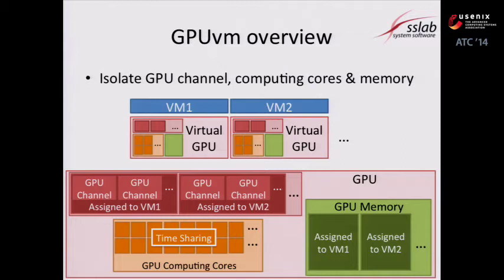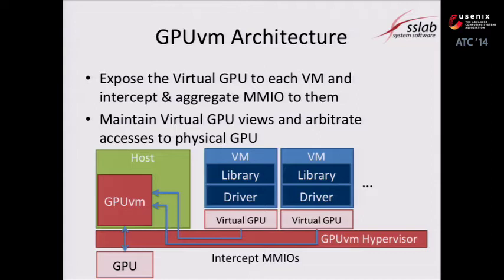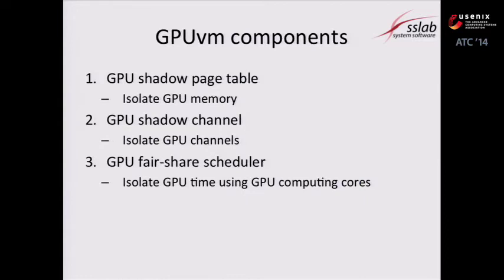GPU VM exposes a virtual GPU device model to each VM, and the guest driver works for it without modification. MMIO to this device model is intercepted and aggregated by GPU VM, which resides in the host. GPU VM maintains each virtual GPU status and arbitrates accesses. GPU VM provides three major components: GPU shadow page table isolates GPU memory, GPU shadow channel isolates GPU channels, and GPU fair share scheduler isolates performance on GPU computing cores.